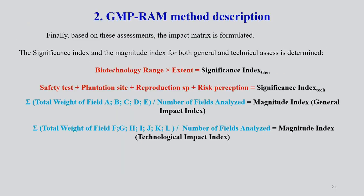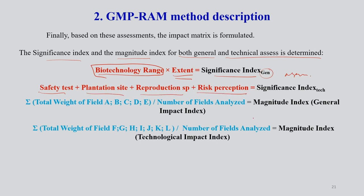Based on this general and technical assessment, the impact matrix is formulated. The significance index and magnitude index — which we discussed earlier — are determined from both general and technical assessment. Biotechnology range here, where significance index is a general assessment. Safety test, plantation site, reproduction species, and risk perception are expressed by the significance index as a technical assessment. The magnitude index, which is a general impact index, is obtained by adding the total weight of fields A, B, C, D, E wherever you have carried out your experiment, divided by the number of fields analyzed — say 1, 2, 3, 4, 5. That will give you a magnitude index.